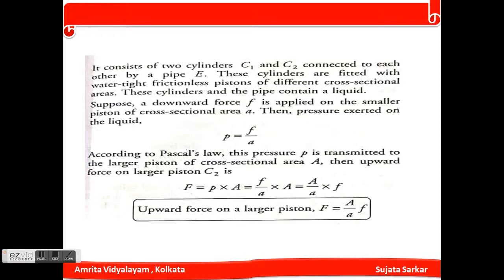According to Pascal's law, this pressure p is transmitted to the larger piston of cross-sectional area A. The upward force on the larger piston C2 equals p × A, which is equivalent to (F/a) × A. Therefore the upward force on the larger piston equals (A/a) × F, which shows it is a force multiplier.